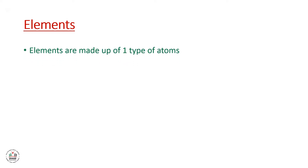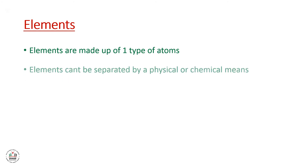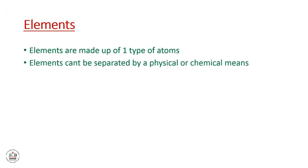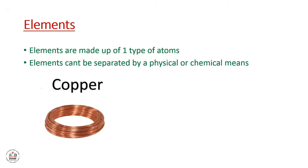Elements in pure substances are made up of one type of atom. These elements can be separated by physical or chemical means. Examples of elements are copper and gold.